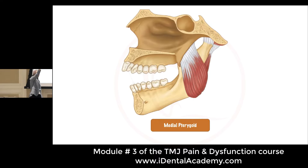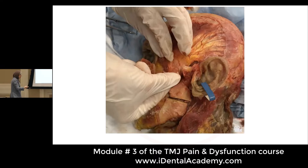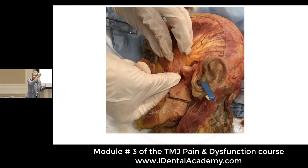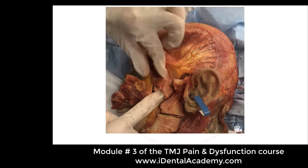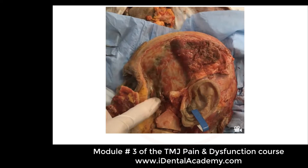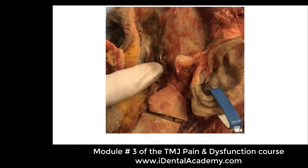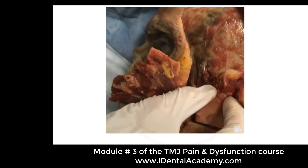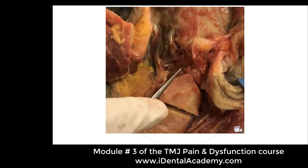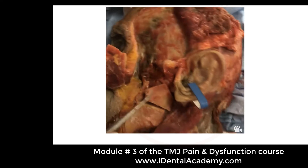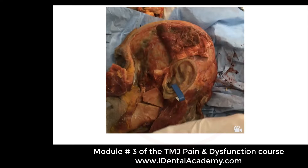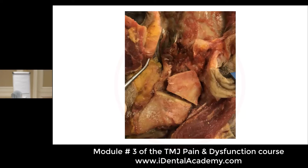Here is a video explaining this area. In order to see the medial pterygoid in the cadaver, we need to reflect the coronoid process. This is the coronoid process with the temporalis attachment. When we deflect it, the first muscle visible is the medial pterygoid, and then deep to it we have the lateral pterygoid going to the condyle. If we move the medial pterygoid out of the way, we can see the lateral pterygoid.